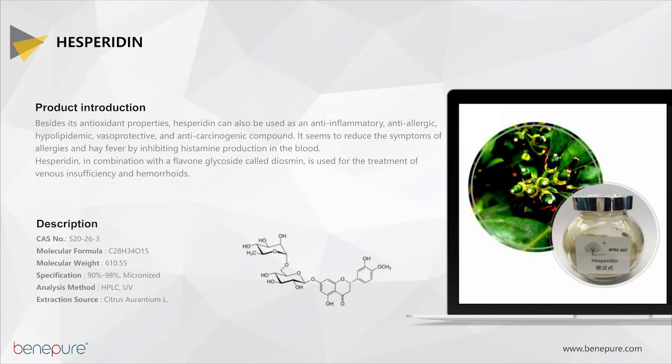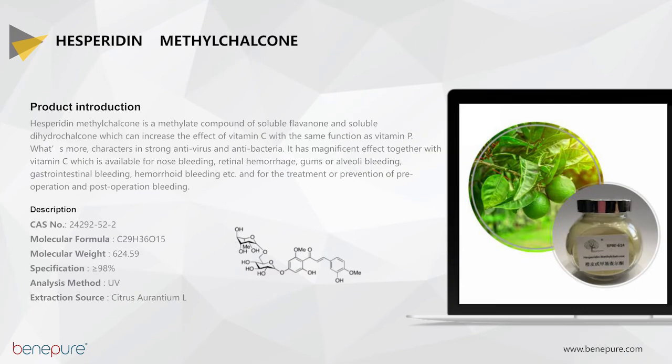Hesperidin is directly extracted from citrus and its derivative can be diosmin. Hesperidin is the starting material for diosmin, and they are usually used together. Hesperidin methyl chalcone is a methylated compound of soluble flavonoids and soluble dihydrochalcone, which can increase the effect of vitamin C with the same function as vitamin C. It is often used for cosmetics and food supplements.